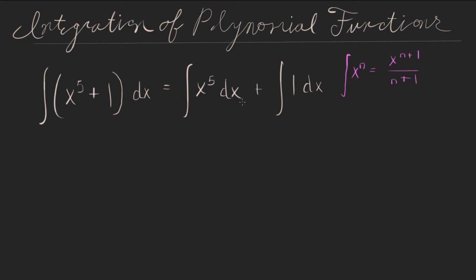Using that, we can apply that to the first component. So x to the fifth is going to look like x to the sixth over 6, and the integral of 1 dx is just x, and then we add on our plus c at the end. And this would be our final answer.